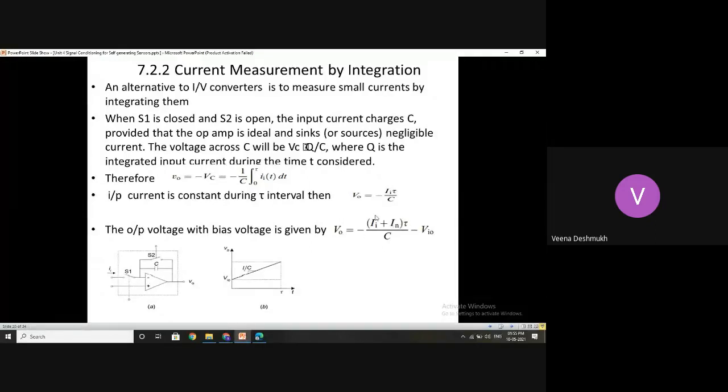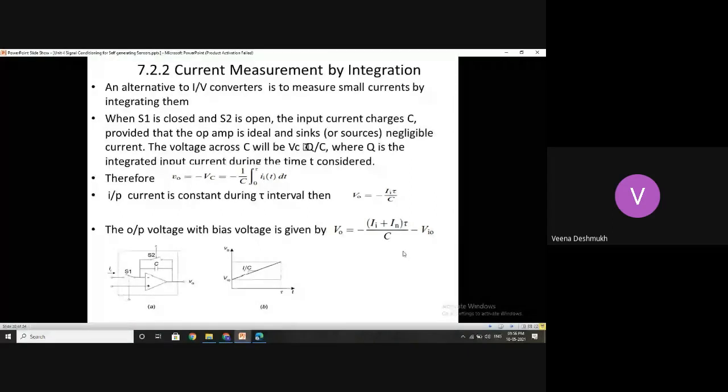IN is the current which is there as biasing current at the inverting terminal and IP is the current available at non-inverting terminal. So here the signal is coming to the inverting terminal. So what we are doing is II is the input or the sensor current plus IN is the current which is there for the inverting terminal, the bias current at the inverting terminal over the interval, II divided by C, and minus this is the care taken to input offset voltage. Assuming that certain input offset voltage is available. So this is what is the total output voltage available for small currents by integration method.